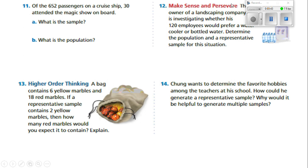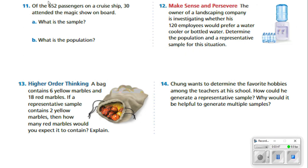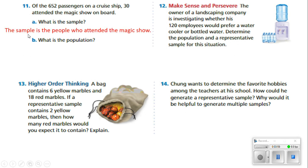We're going on to number 11 now. Of the 652 passengers on a cruise ship, 30 attended the magic show on board. What is the sample? They selected 30, so 30 is the sample — the people who attended the magic show. What is the population? The population would be the 652 people that are on the cruise ship.